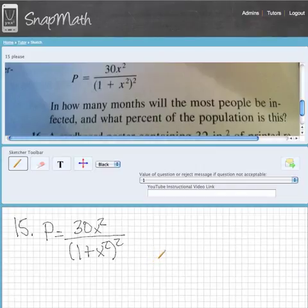Hi Kelly, welcome to SnapMath. We've been given this problem that gives us the percentage of people infected by a disease once the disease starts. x is going to be the months, how many months have passed since the disease has started.